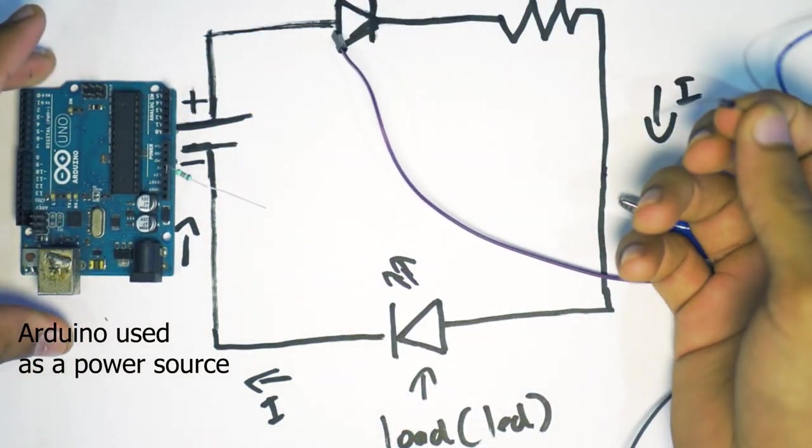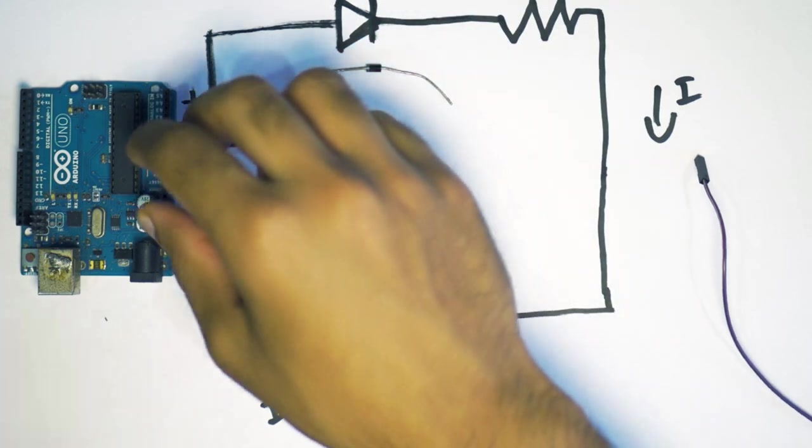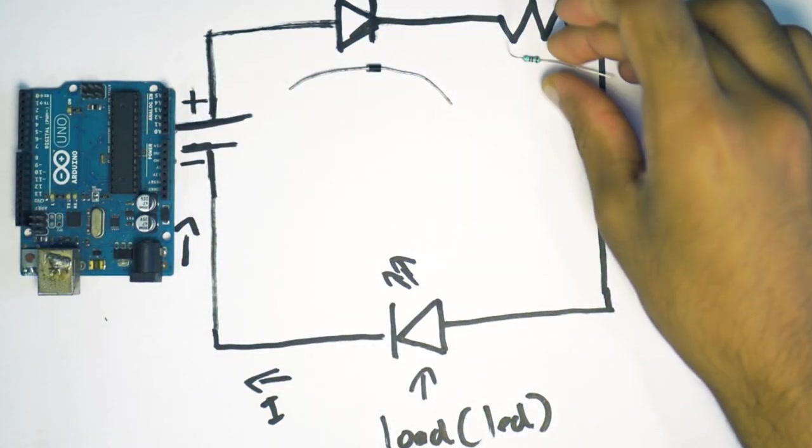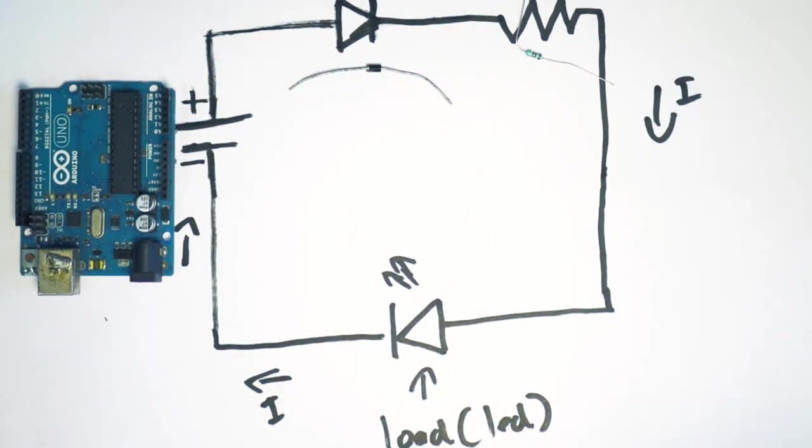So let's go ahead and just do the quick test demo. Here I have an Arduino. Here I have a diode. Here I have a resistor. And here I have my LED circuit here. So I'm going to wire it up and test it out.